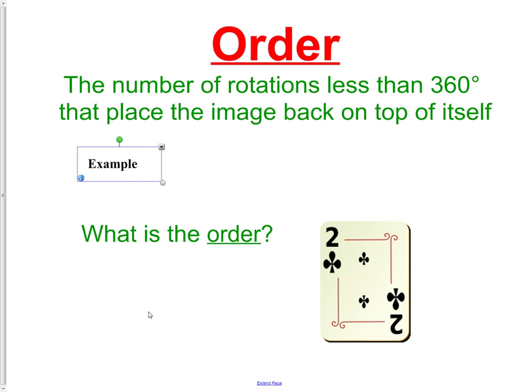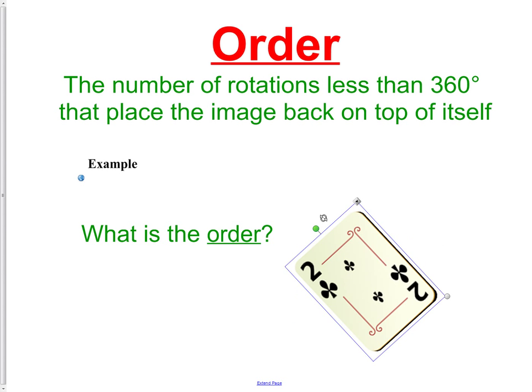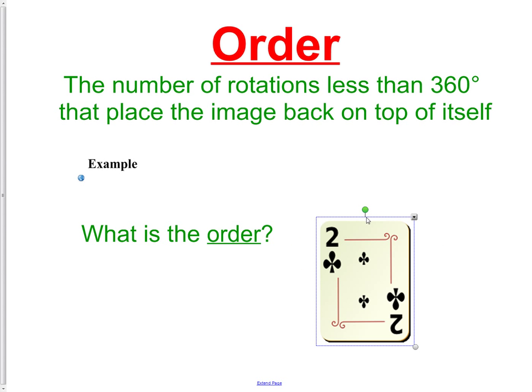If every object can be rotated around and land on itself, if that's all it can do, then it has no symmetry. It needs to have more than one spot where it's going to land on itself and be a perfect match. So this two of clubs has order two. Once when it rotates here, and then once when it rotates all the way back to where it began. We would have an order of two.